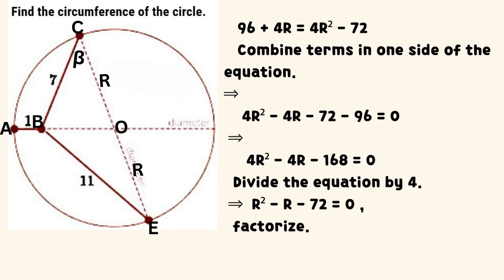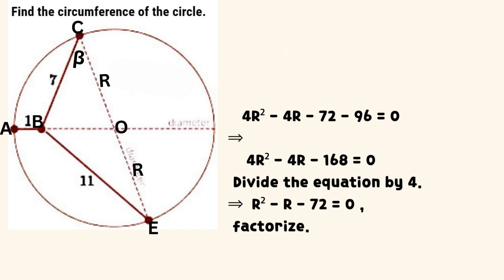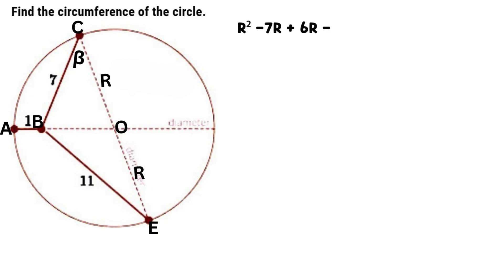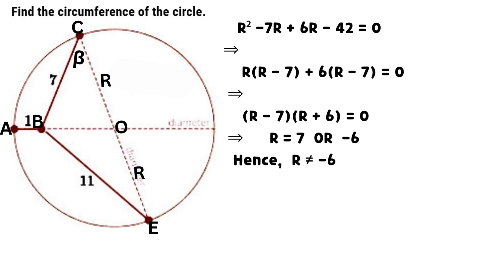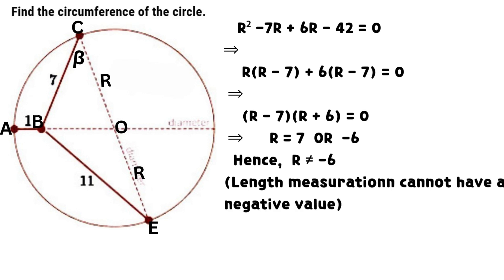Then factorize it. The square of R minus 7 times R plus 6 times R minus 42 equals 0. Simplify and we have that the product of (R minus 7) and (R plus 6) equals 0. It implies that R equals 7 or negative 6. Hence, R is not equal to negative 6, as a length cannot have a negative value. Therefore, R equals 7 units.